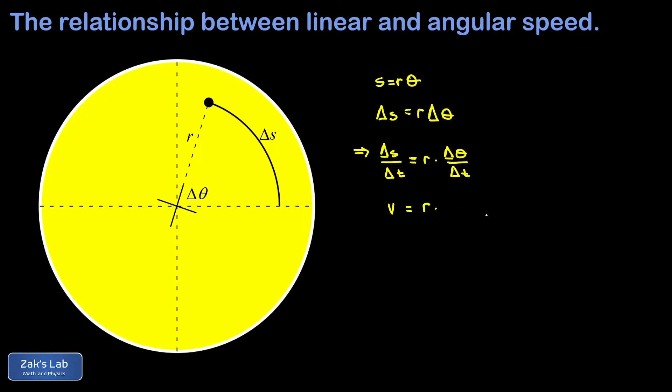Delta theta over delta t, that's just the average angular speed, but it's uniform circular motion, so that angular speed never changes and we'll just call it omega. And I'll post a link to the video at the top where we first introduced angular speed.